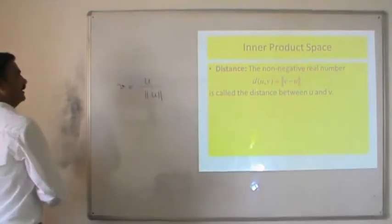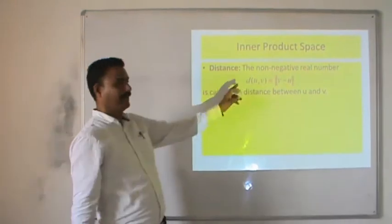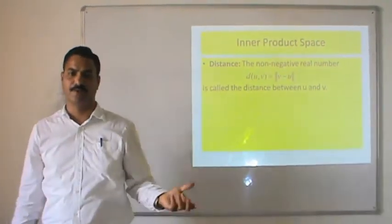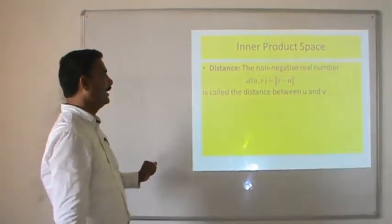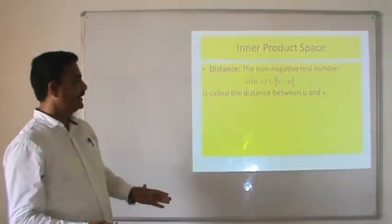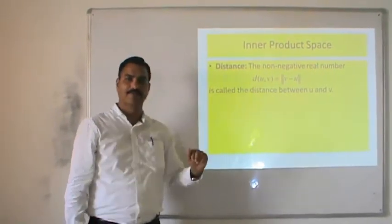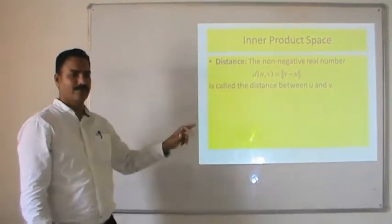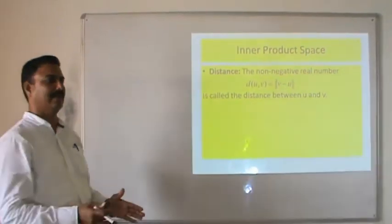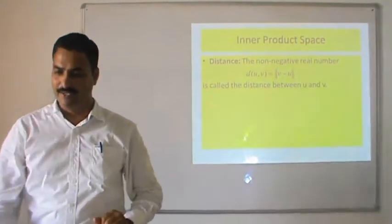The distance between two vectors u and v is the non-negative real number d(u, v) = ‖v − u‖. The norm of the difference v − u gives the desired distance between the two vectors. So in order to determine the distance between two vectors u and v, we simply determine the norm of their difference v − u.